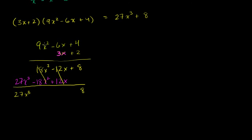You can use this technique to multiply a trinomial times a binomial, a trinomial times a trinomial, or really any combination — even five terms times five terms. This will always work as long as you keep things in their proper degree place.